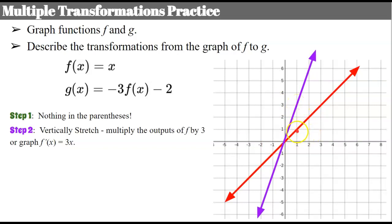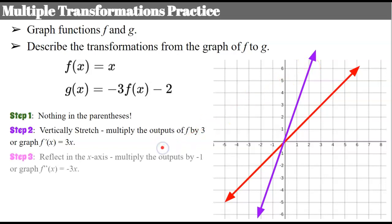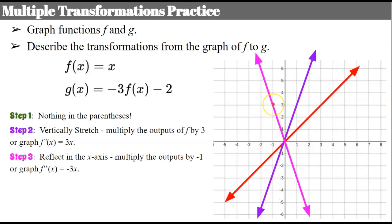Or you can take your outputs: input 1 gives output 1, multiplied by 3 gives 3; input 2 gives output 2, multiplied by 3 gives 6. Either method works. Step 3: a is negative, so now I'm going to reflect it in the x-axis. You can multiply all the outputs by negative one — so the point one, three reflects over the x-axis to one, negative three. After graphing the stretch and the reflection, this is my resulting line.